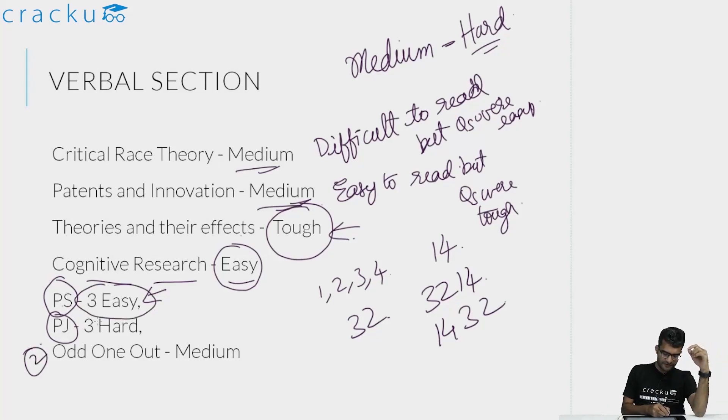There were two odd one out. One of them I felt was very easy because I was able to identify what are the remaining four para jumbles and how they actually can be arranged. So I was immediately able to figure out which is the odd one out sentence. But the second odd one out question, I had difficulty in answering. So that is the reason I am giving this to be slightly on the medium side. Overall, a very good attempt. Somebody who is looking to score say 90 plus percentile in verbal section should be looking to get between 25 to 30 in this section.